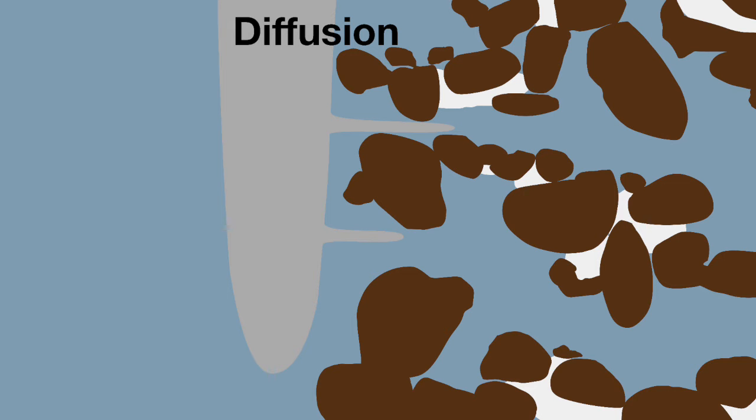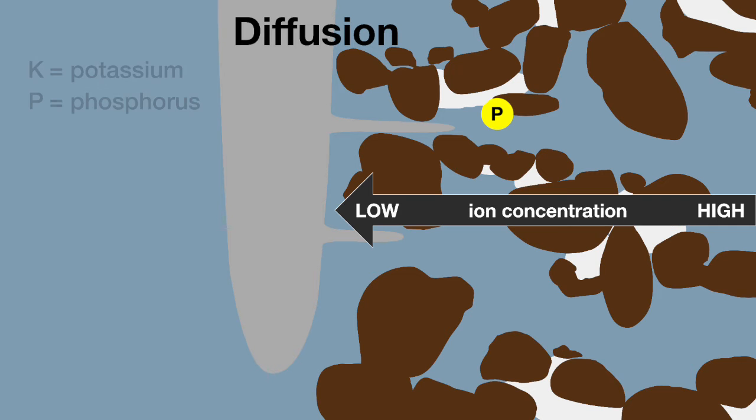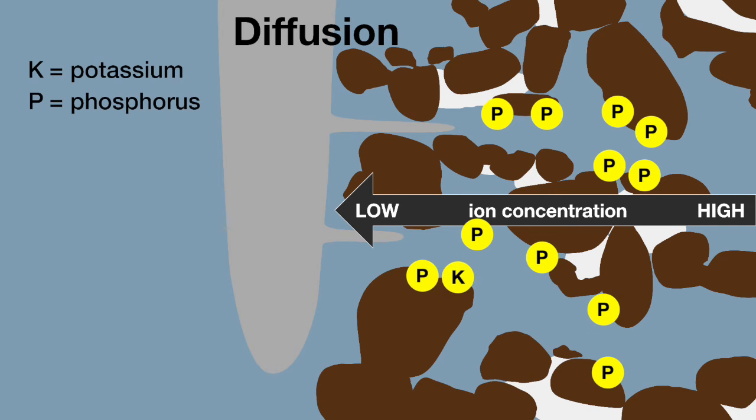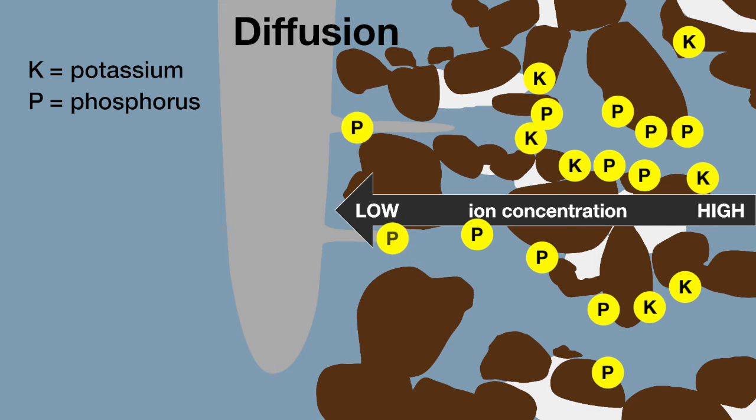Diffusion is the second process. It occurs when there is a concentration gradient of ions towards the root surface. Movement of ions occurs over short distances within the rhizosphere, following the gradient from high concentrations to lower concentrations.